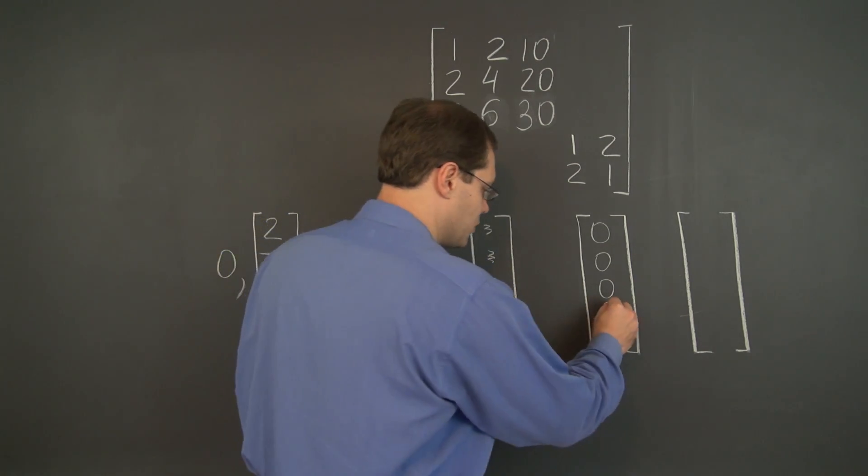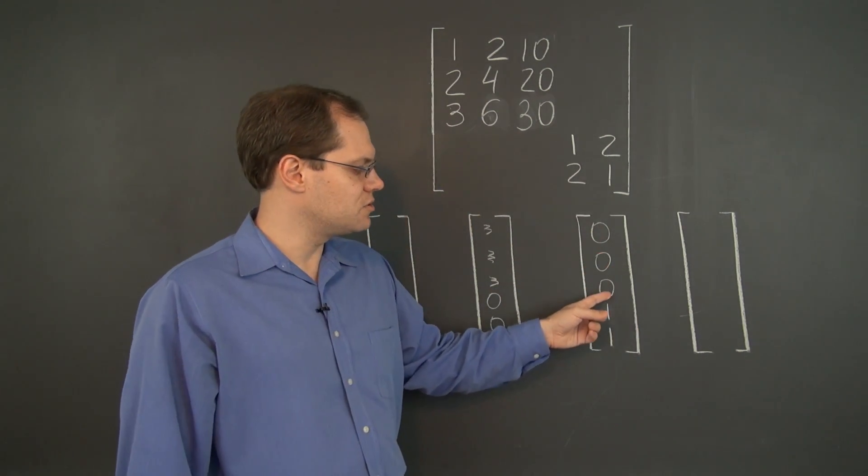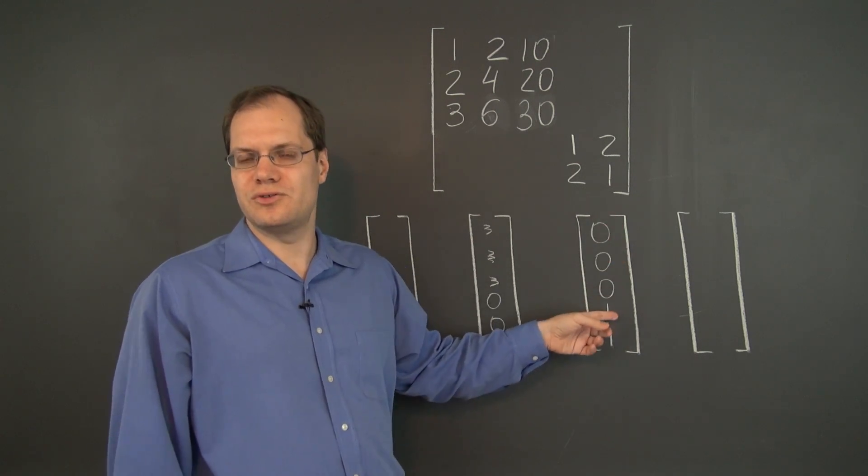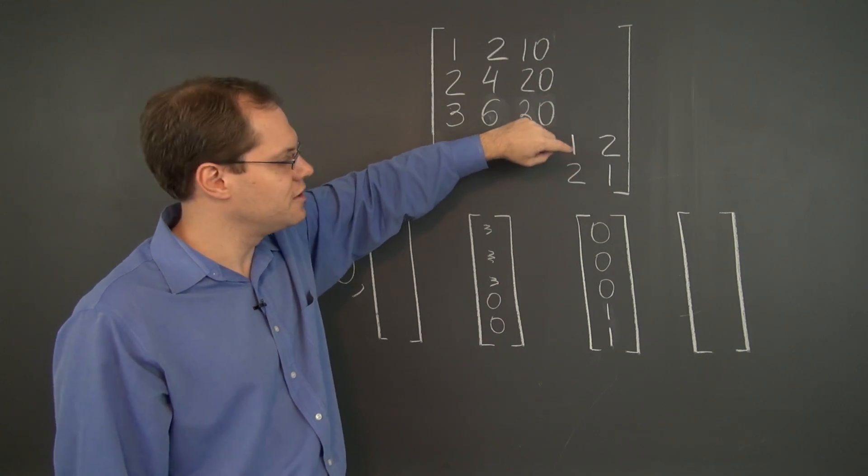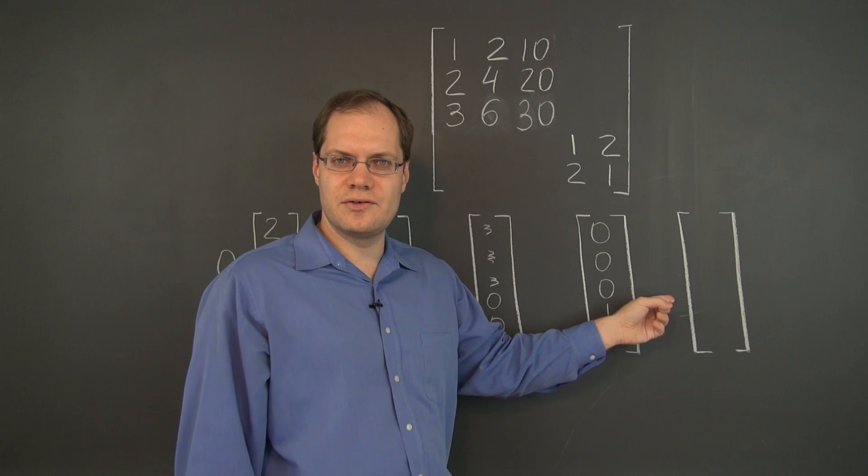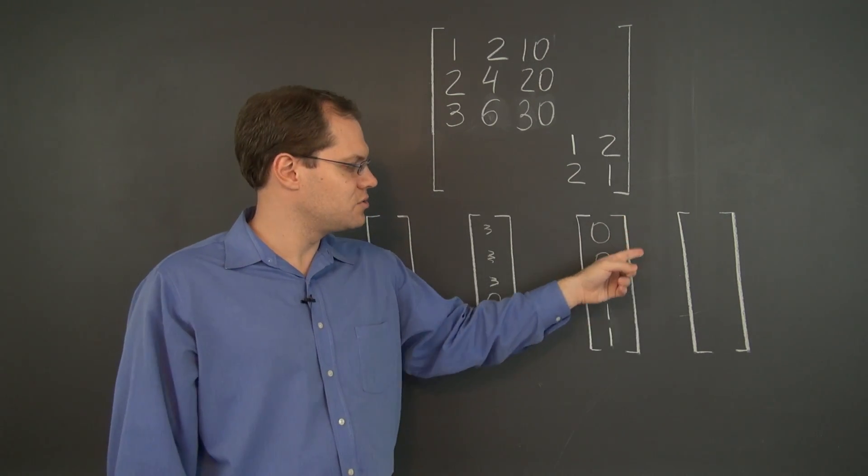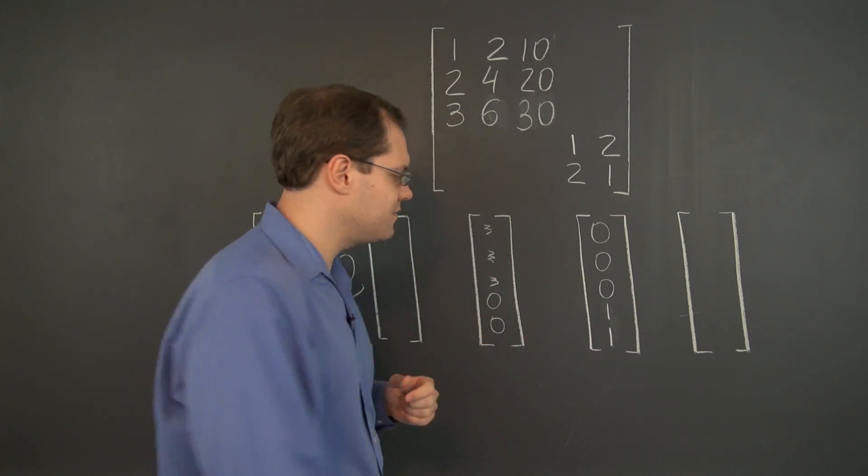So think about what would happen if you multiply the entire matrix by zero zero zero one one. The answer will be zero zero zero. Nothing here matters at all because of those zeros. Three three. And of course zero zero zero three three is a straight multiple of zero zero zero one one. And the corresponding eigenvalue is three.